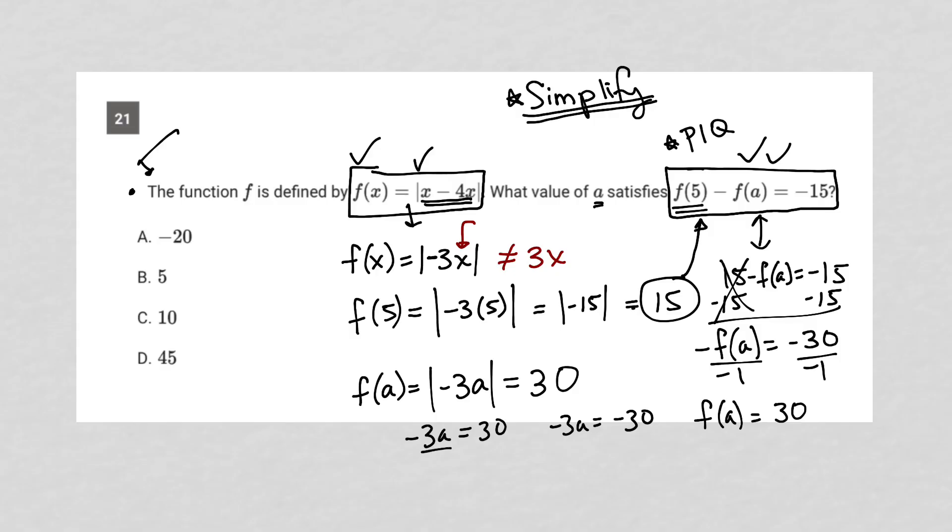So in this case, I divide by negative 3 and I get a equals negative 10. So that's one possible answer for a. And over here, I divide both sides by negative 3 and I get a equals positive 10. That's another way to get my answer. Looking at the answer choices, it looks like I have the positive 10 version of that. And therefore, choice C is the correct answer.